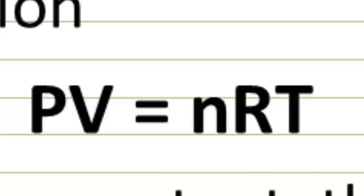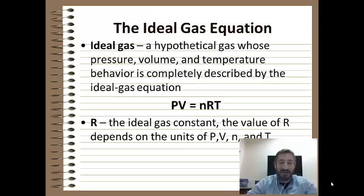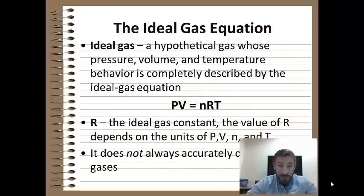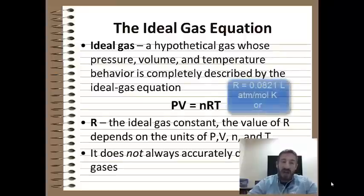So the only thing you probably don't recognize here that we haven't covered is R. R is called the universal or the ideal gas constant. The value of R depends on the pressure, the volume, temperature, and the number of moles. But it is a constant and we will use it throughout the problems and I will always give you this value as well. So for an ideal gas, it does not always accurately describe a gas. Ideal gases usually exist when things are approximately at one atmosphere and zero degrees Celsius. We know those conditions do not exist, but we'll use that to describe gases in many situations.